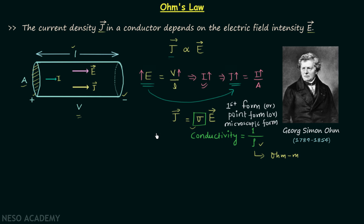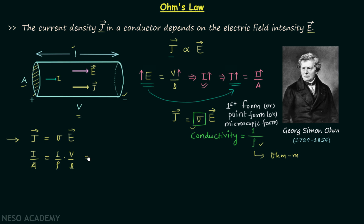Now we will move on to the second form of Ohm's law, derived from the first form. From the first form, current density J equals conductivity sigma times electric field intensity E. Substituting J equals current I divided by cross-sectional area A, sigma equals 1 over rho, and E equals voltage V divided by length L, we get: I divided by A equals (1/ρ) times (V/L). From this, voltage V equals rho times L divided by A, multiplied by current I.